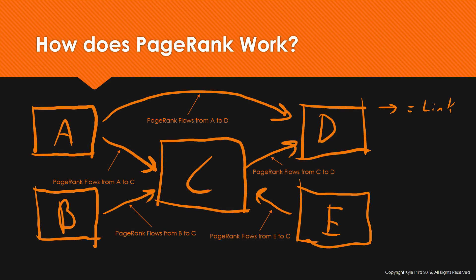We're going to diagram this out, because I think this is the easiest way to show you how PageRank works. In this diagram, each letter represents a different page on this small network of links, and the arrows represent links pointing to a page. We can see that Page A is linking to Page D and also to Page C, Page B is linking to C, Page E is linking to C, and then C is linking to D.